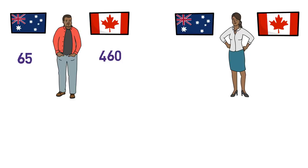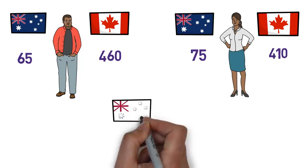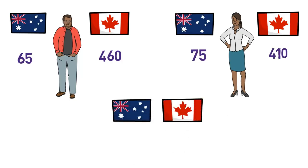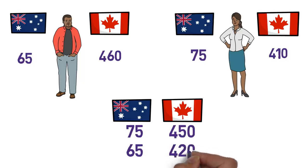Conversely, if you have 75 points for Australia but only 410 CRS points for Canada, Australia becomes the better option — you could get an invitation within a couple of months, whereas for Canada you'd need to wait or apply through a PNP program. If you have a very good score for both or a borderline score for both, then the remaining factors in this video will help you decide.